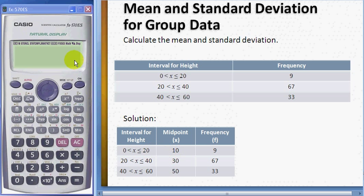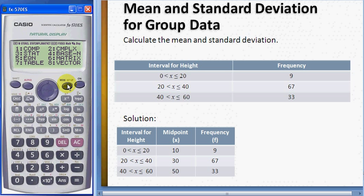After you find the midpoint, then you go to mode and the stat and one variable, and you need to press shift mode and down stat to turn on the frequency.